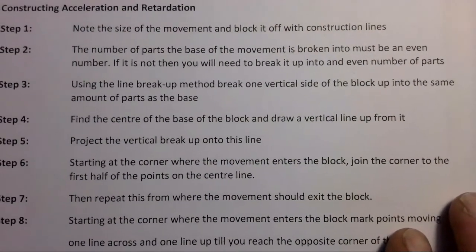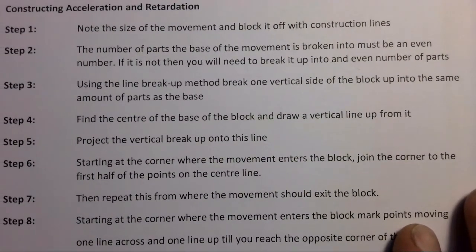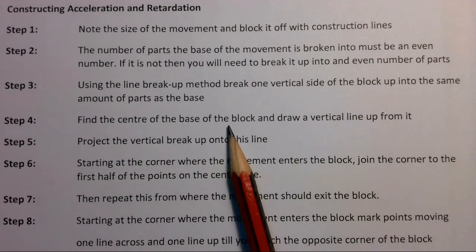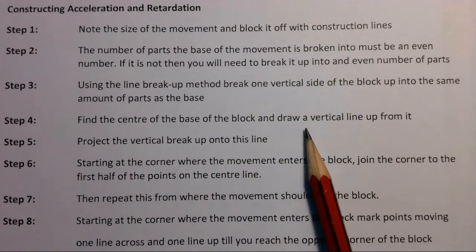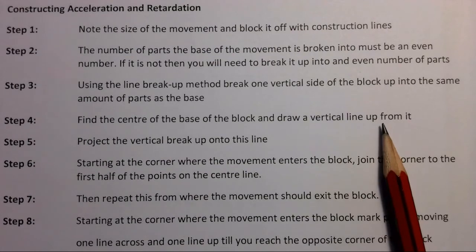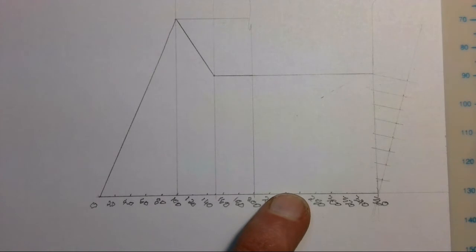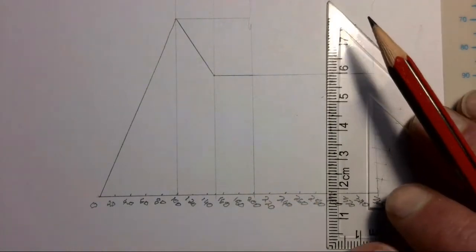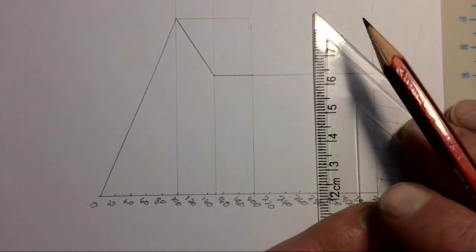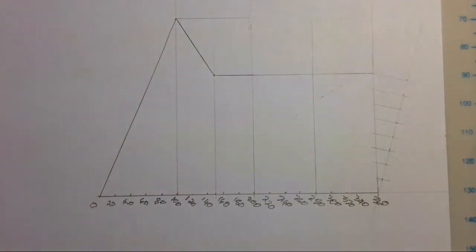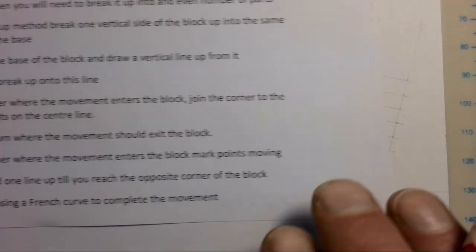Now for step four: find the center of the base of the block and draw a vertical line up from it. The base of our block — counting four points in — gives us the center, and we draw a line going straight up. That completes step four.